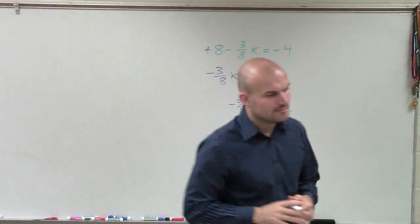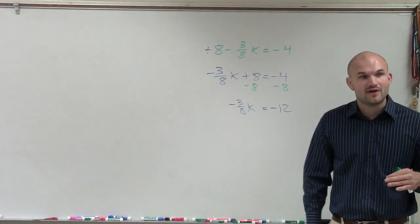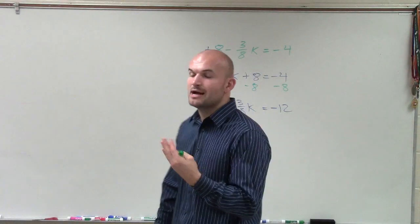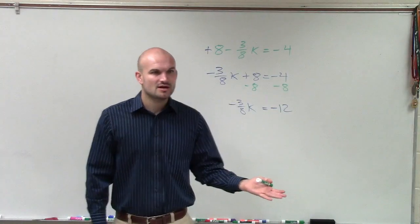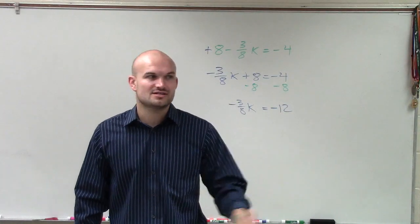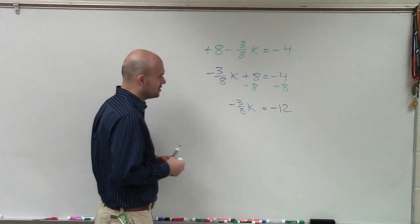So now I have my k being multiplied by a fraction. And to undo multiplying by a fraction, we can multiply by the reciprocal. We can also divide it, but if you guys remember dividing fractions, one of the simple ways to divide fractions is to multiply by the reciprocal, right? So I'll just multiply by the reciprocal.